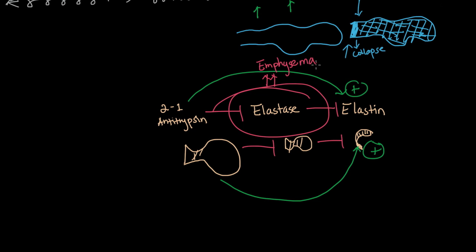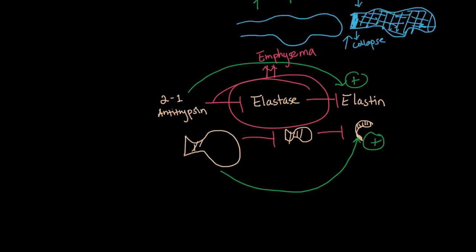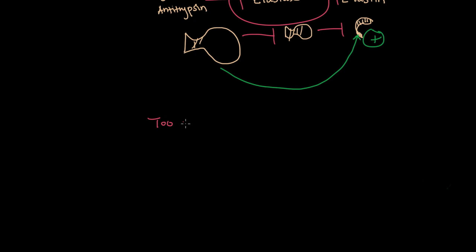Now in terms of too much elastase, there are two main ways to have that. Any time you see ACE here, A-S-E, that's usually a protease, so it destroys a certain kind of protein.